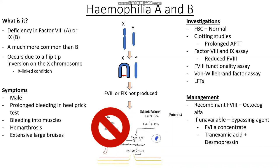If that still doesn't work, we can give cryoprecipitate — a blood product that contains Factor VIII and von Willebrand Factor — to replace Factor VIII levels. If that is unavailable, as is still the case in some lower-resource countries, fresh frozen plasma can be given, as it contains all of the clotting factors in our plasma. We will cover clotting factors and these blood products in more detail in a separate video.